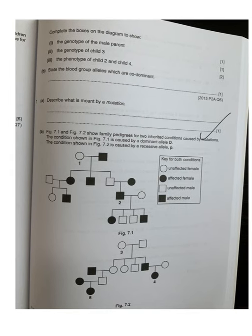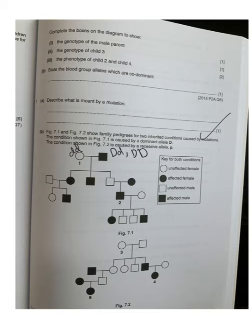Moving to question 7b, figures 7.1 and 7.2 show the family trees of two inherited conditions caused by mutation. The condition in figure 7.1 is caused by the dominant allele D, meaning big D small d or big D big D will show the trait. All unshaded individuals are unaffected and confirmed homozygous recessive. In figure 7.2, the condition is caused by the recessive allele — small p small p.